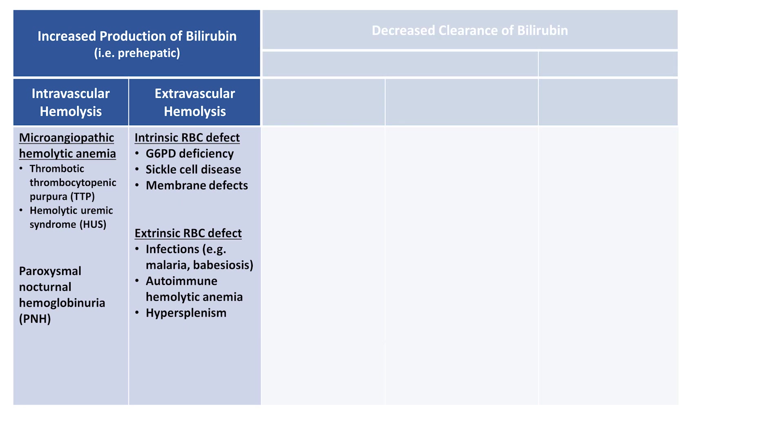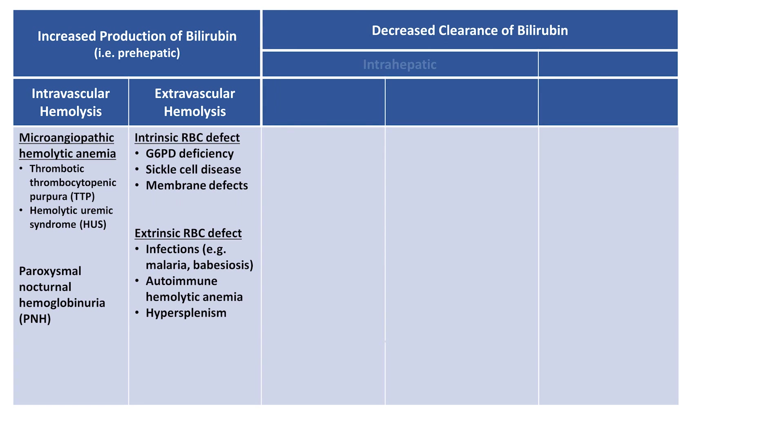Moving to conditions which decrease the clearance of bilirubin, intrahepatic etiologies can be subdivided into defects in transport and/or conjugation, and intrahepatic cholestasis.